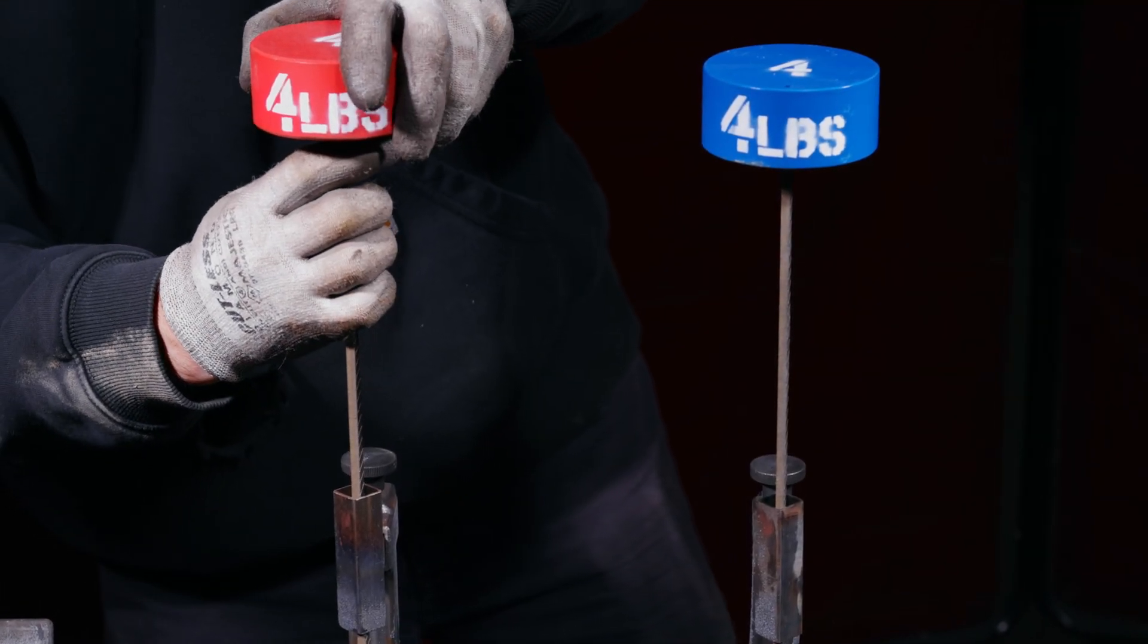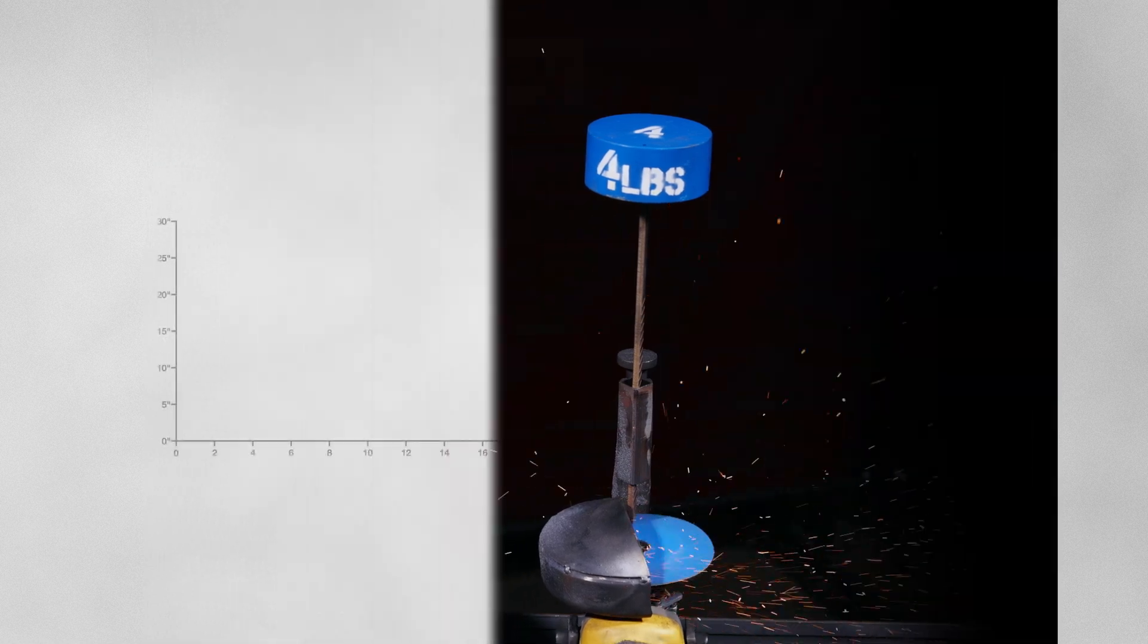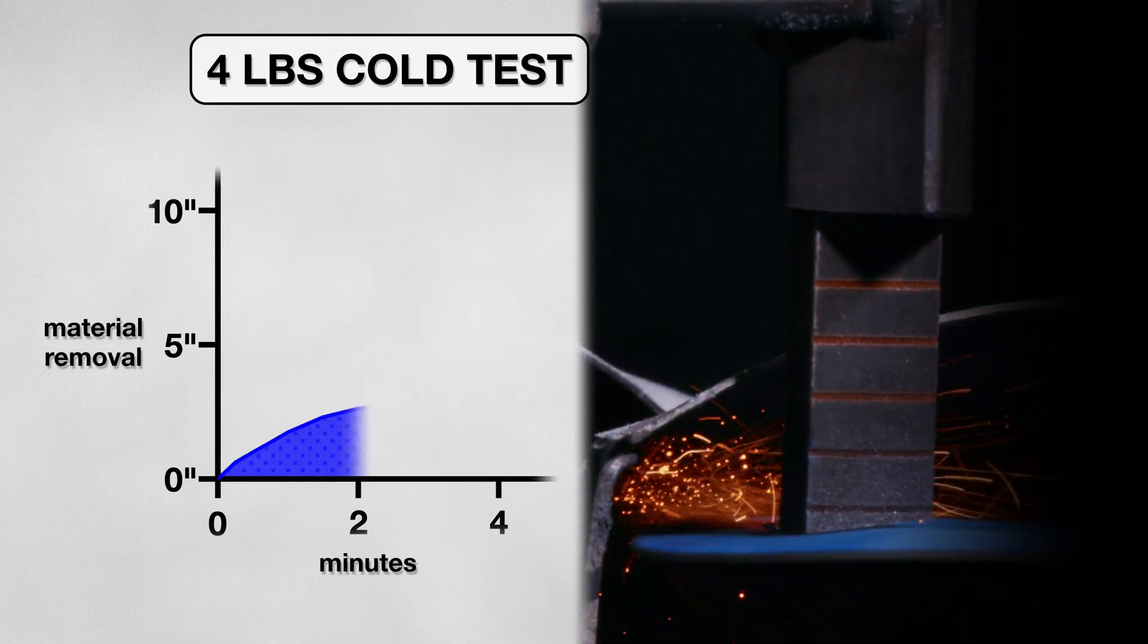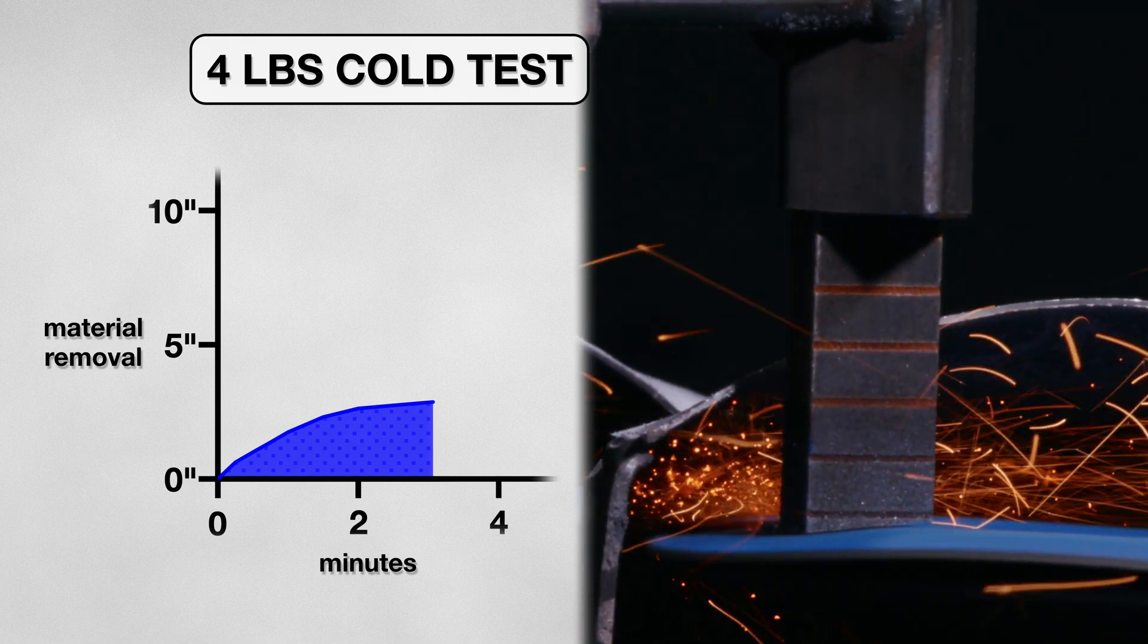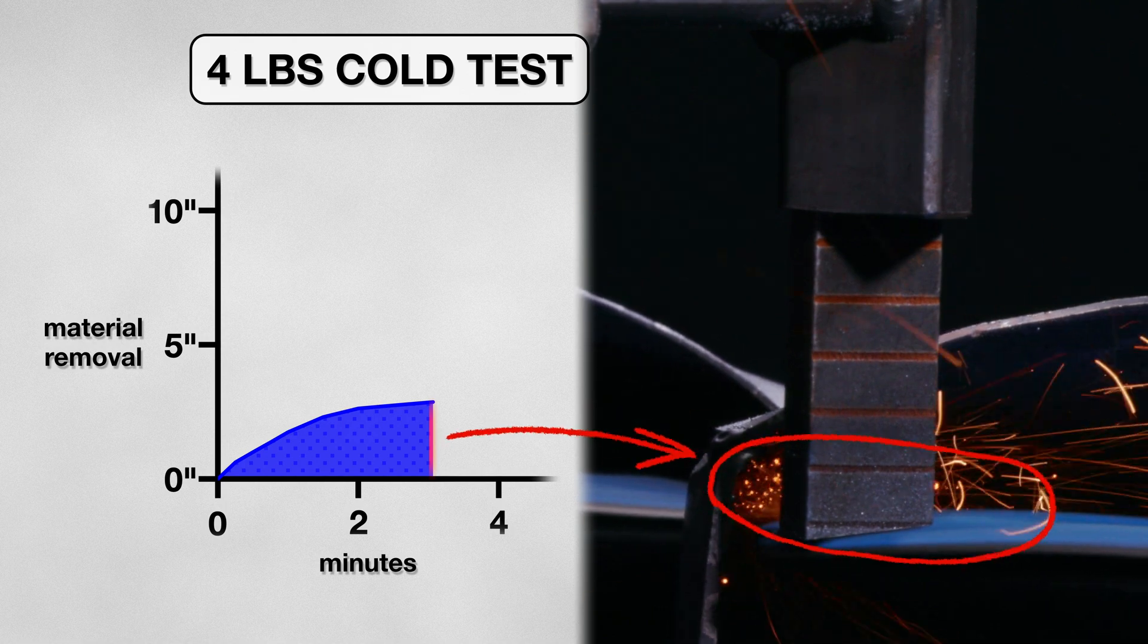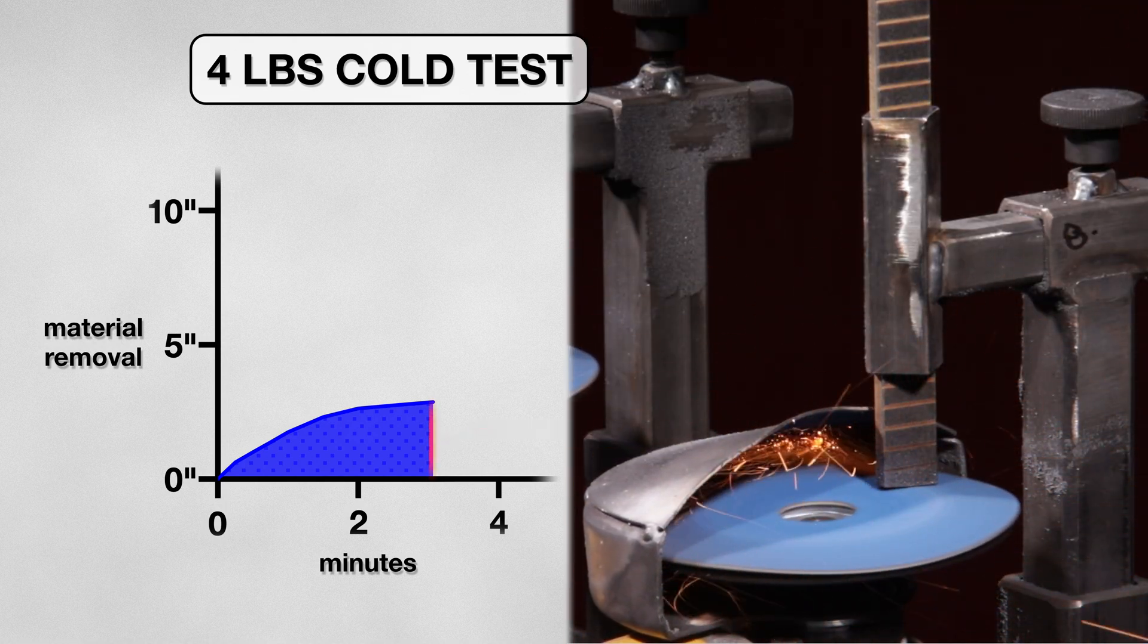I started my tests with a four pound weight attached to my rig. This is roughly the weight of the grinder. When the test started, the disk removed material at a very slow rate. A little over three minutes in, and I couldn't see any more metal being cut from the coupon, so I ended the test. When it was all said and done, I saw a little under three inches of material removed from the coupon. Not a great start, but I think I can get much more out of this disk.